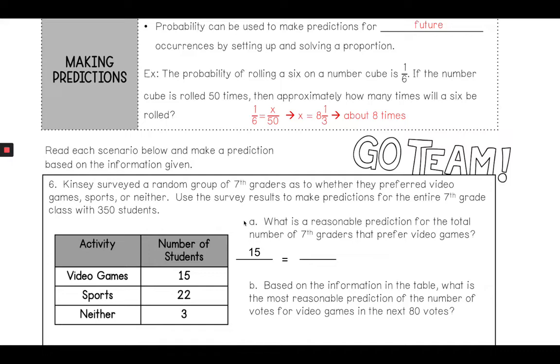I'll start by setting up my cross product. I know that there are 15 students that prefer video games out of 40 total surveyed. We're going to try to find what was the reasonable prediction. There's 350 students—I don't know how many prefer video games. I set up my cross product: multiply 15 times 350 and divide by the leftover, which is 40. Once I do that, I get 131 students. So 131 students based off of my data will prefer video games over sports.